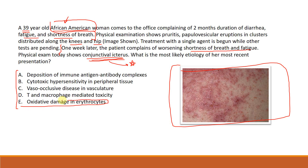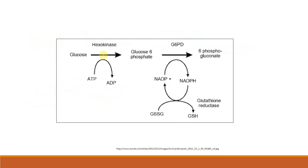The answer is oxidative damage in erythrocytes. Going through the other choices: deposition of immune antigen-antibody complexes is a Type 3 reaction; cytotoxic hypersensitivity is Type 2; vaso-occlusive describes sickle cell — she's African-American but the rest doesn't fit; T-cell and macrophage-mediated toxicity is Type 4. None of these match the clinical picture.